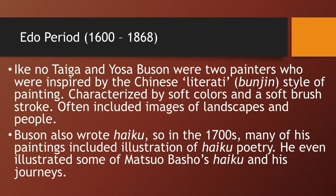Ike no Taiga and Yo Sabuson are two painters who were very inspired by China — specifically the Qing Dynasty literati style of painting, called Bunjin in Japanese. It's usually characterized by very soft colors, soft brushstrokes, and a strong focus on landscapes with people in them. This is very reminiscent of Qing Dynasty Chinese painting, which these two painters were inspired by.